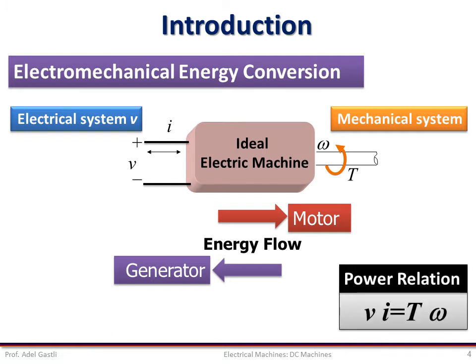If the losses inside the machine are neglected and using the power conservation rule, we can write that the electrical power equals the mechanical power, where the electric power is the product of the terminal voltage and current, and the mechanical power is the torque on the shaft multiplied by the speed of the shaft.